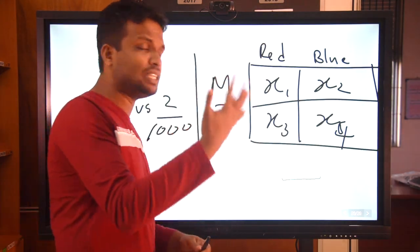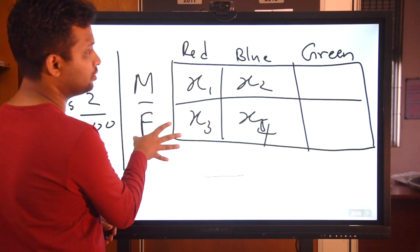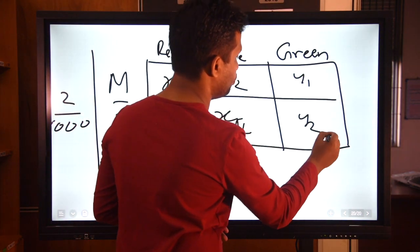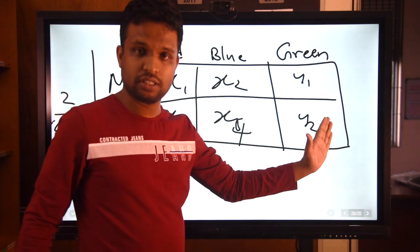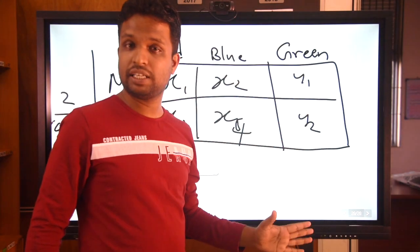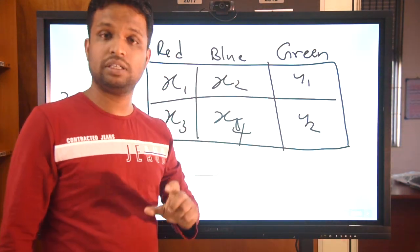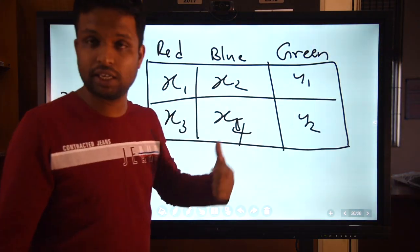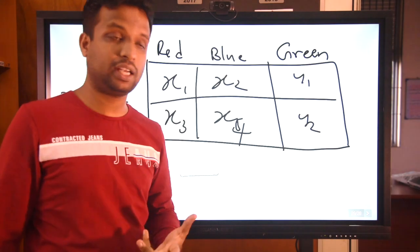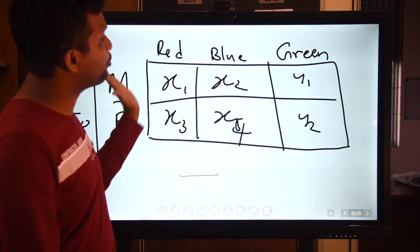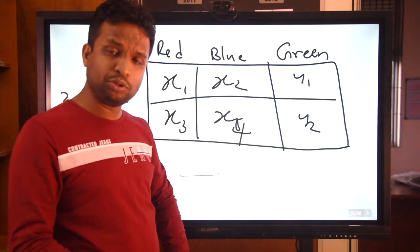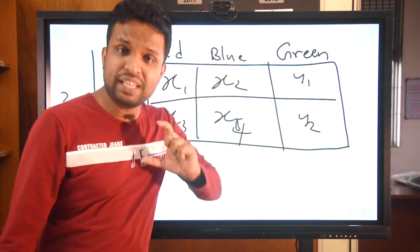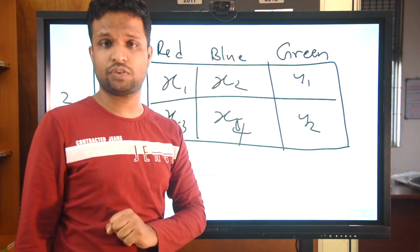Now assume that we have another color — green. In this situation you can't apply the z-test or t-test. You have to go for the chi-square test. In chi-square test you can compare two proportions or more than two proportions. That is the importance of chi-square test.